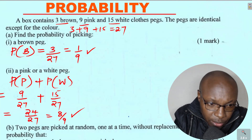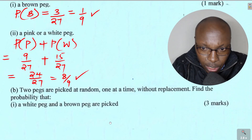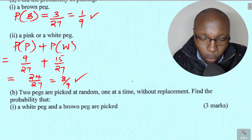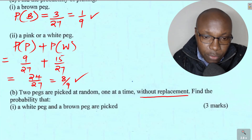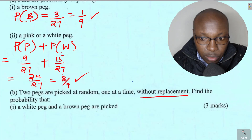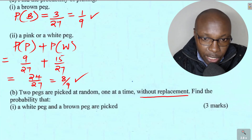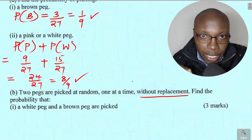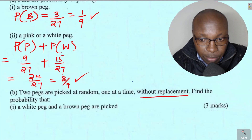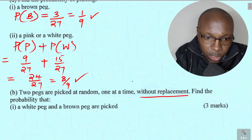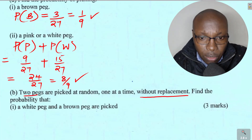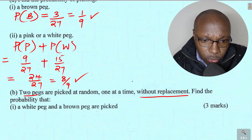Now let's go to Part B. Two pegs are picked at random one at a time without replacement. Note this — without replacement means when you pick a peg from the box, the total will change. You have to subtract 1. If there are 27 pegs and you pick one, the ones that remain are 26. Once a peg is picked, it is gone and no replacement is done. It is advisable to use a tree diagram.